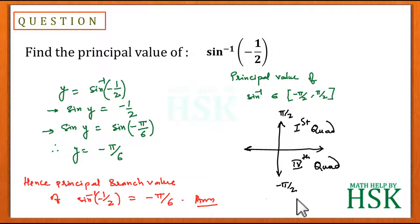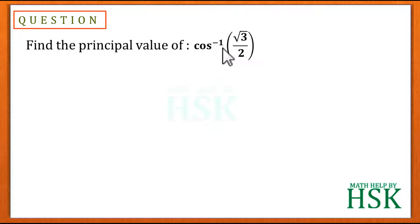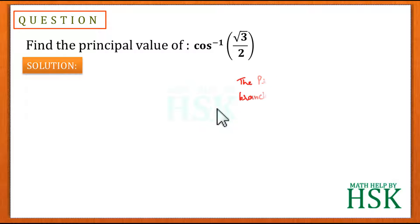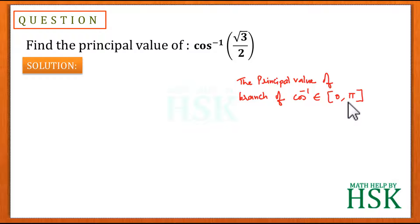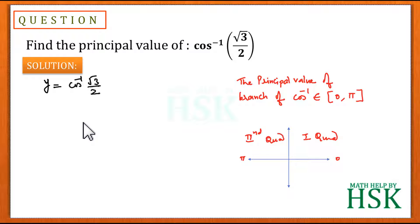Taking question number two of exercise 2.1, we have to find the principal value of cos inverse of root 3 by 2. To solve this, we note that the principal value of the cos inverse function belongs to the interval 0 to pi, meaning the principal value lies in the first or the second quadrant. We assume that y equals cos inverse of root 3 by 2.